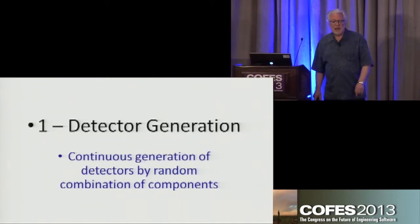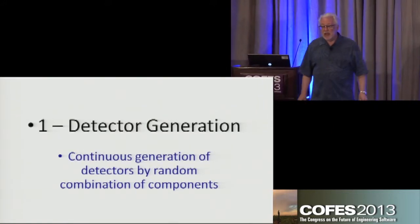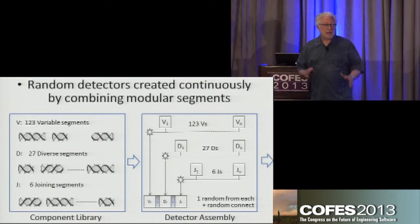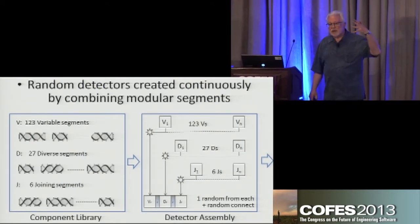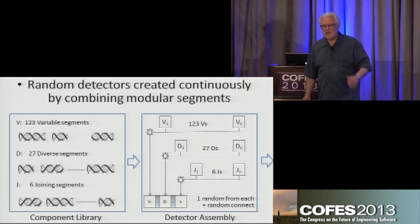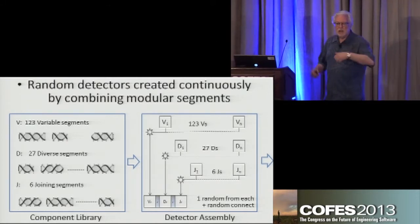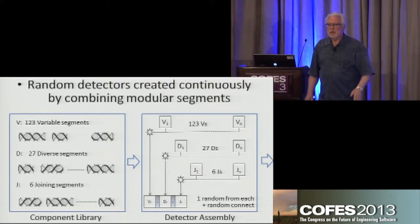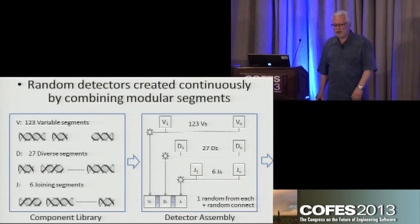The first stage is detector generation. It happens on a continuous basis with a two-element concept. The first element uses three libraries — V, D, and J — each with a very small number of fixed DNA segments. The second element grabs one from each library and glues them together with some random nucleotides in between. We can get ten to the ninth different kinds of combinations by doing this randomly.